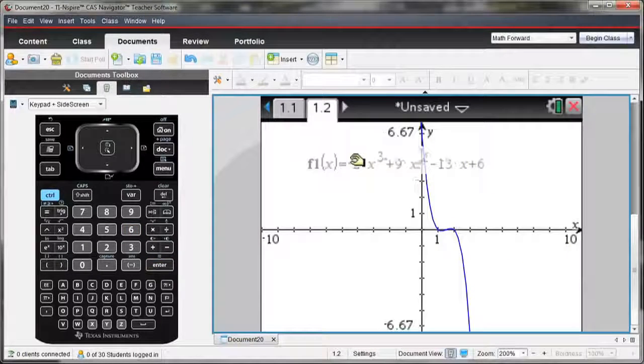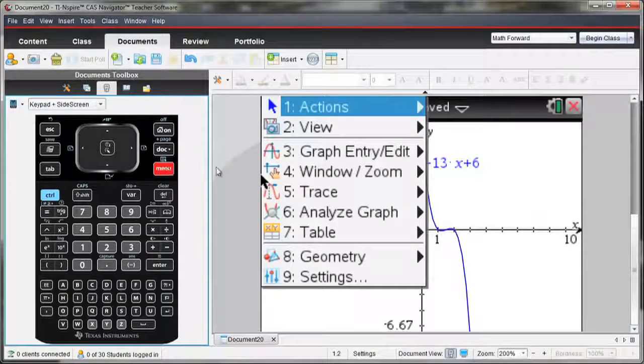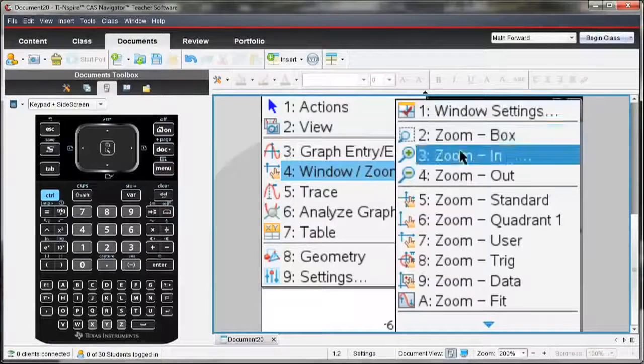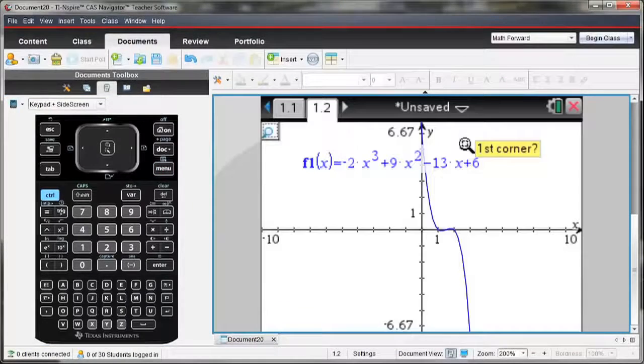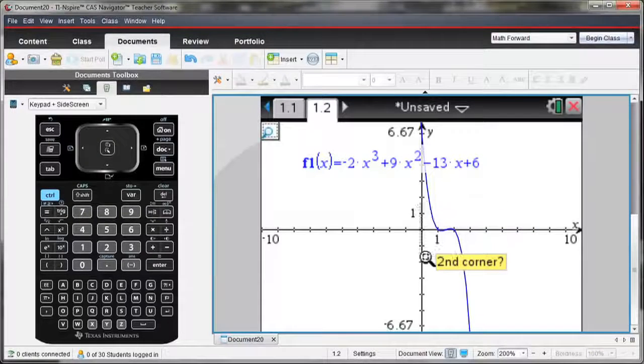If I look at my graph, I notice that I'm not using the entire window. There's a couple of ways that I can change the window. I think maybe the quickest one for this would be to go to Window Options, Zoom, Box, because I want to specifically look in here to find my minimum and maximum values.